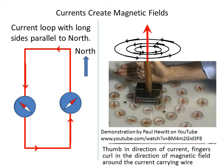The general rule is that if you put your thumb in the direction of the current then your fingers curl in the direction of the magnetic field around the current carrying wire.